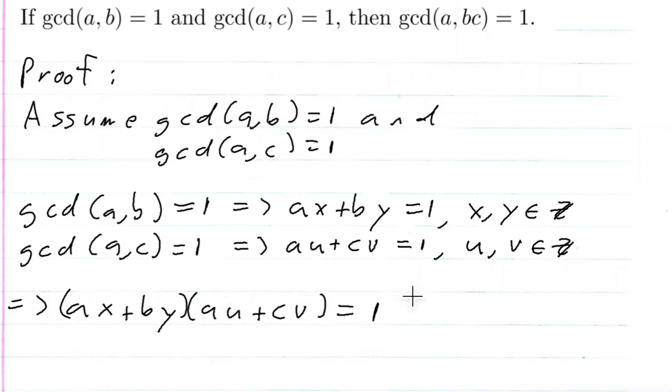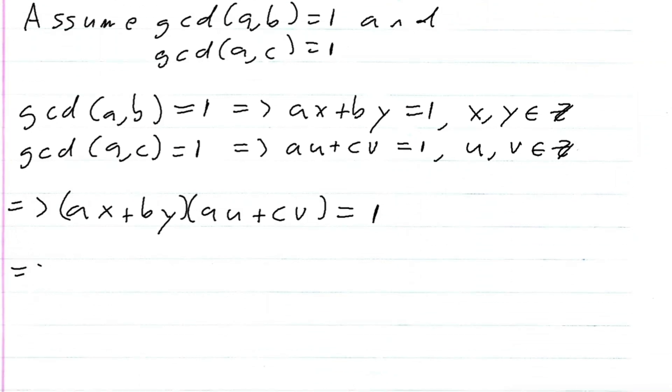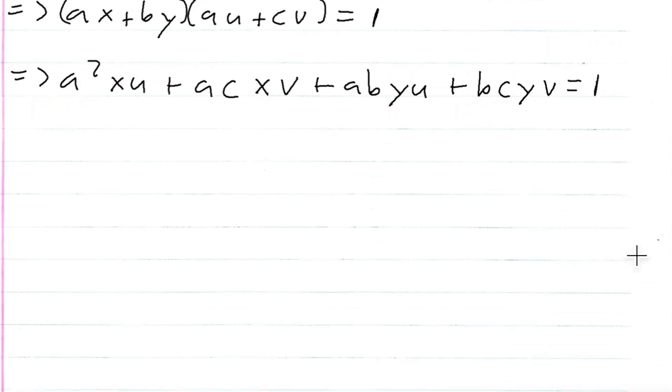Now let's go ahead and distribute. So this implies that A squared X, U plus A, C, X, V, plus A, B, Y, U plus B, C, Y, V is equal to one, right?